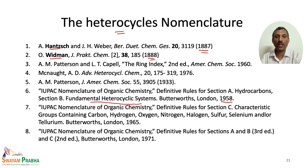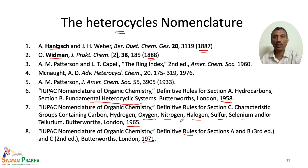In 1958, IUPAC introduced specific rules for heterocyclic systems. In 1965, they modified the rules for naming compounds containing oxygen, nitrogen, halogen, sulfur, selenium, and tellurium. In 1971, they also included more sections for the nomenclature of heterocyclic compounds.